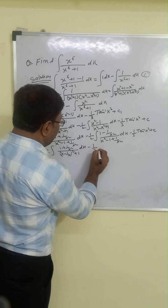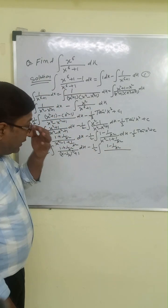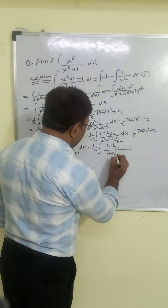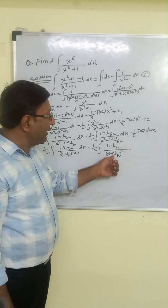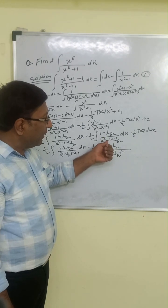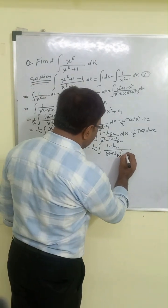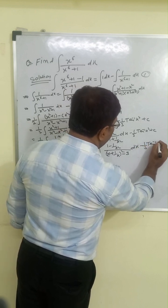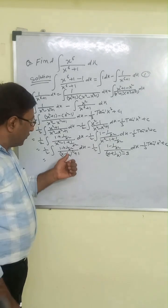Similarly for the second part: minus 1/2, and we have 1 minus 1/x². For the denominator, writing (x + 1/x)² = x² + 2 + 1/x², but we need x² minus 1 plus 1/x², so plus 2 is not given. We add plus 2 and minus 2, giving minus 3. It is already minus 1/3, and this is arctan(x³) plus c.